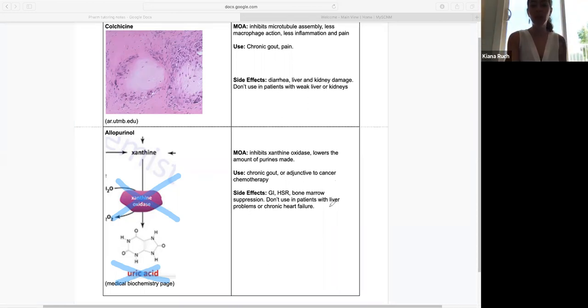Similar to colchicine, you can't use this in people who have liver problems. Also, you can't use allopurinol in patients with chronic heart failure. If you have any questions about gout drugs, feel free to send me an email. Happy studying.